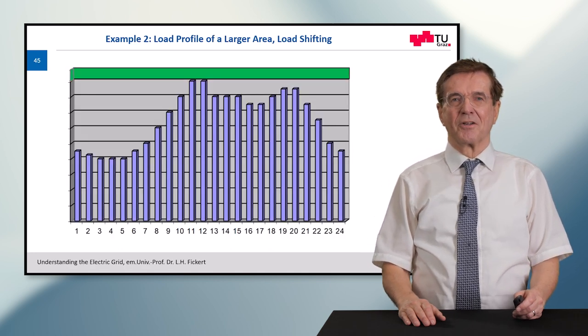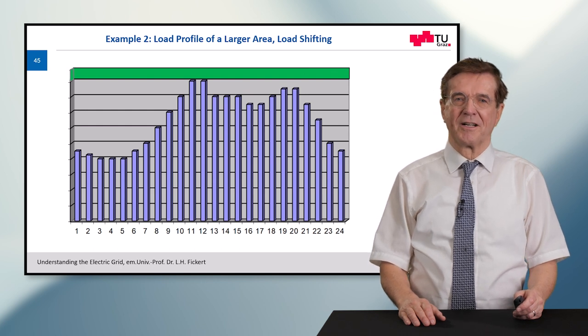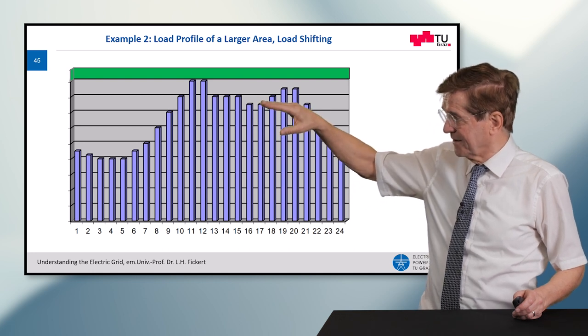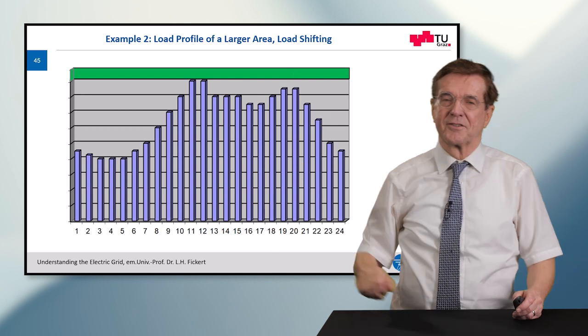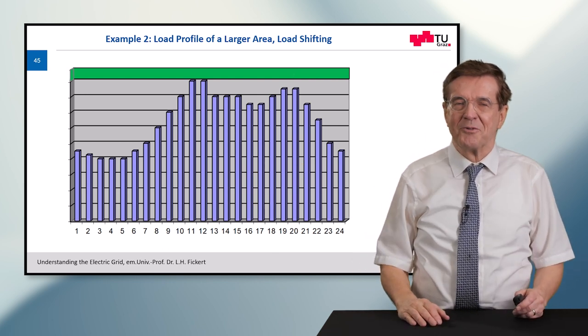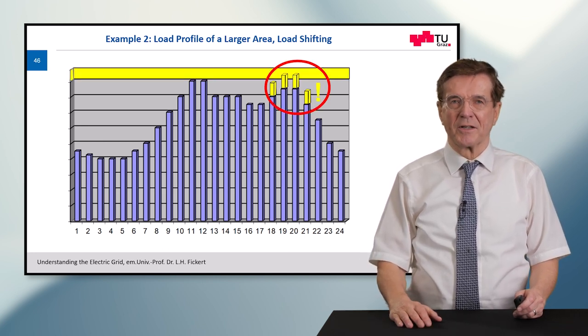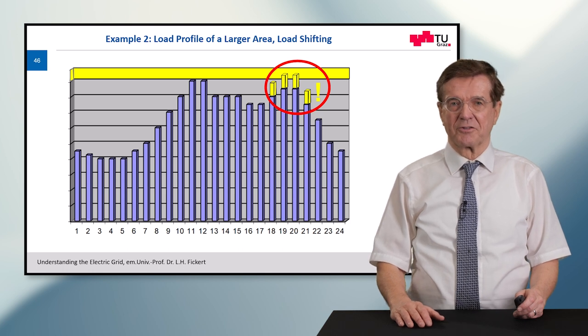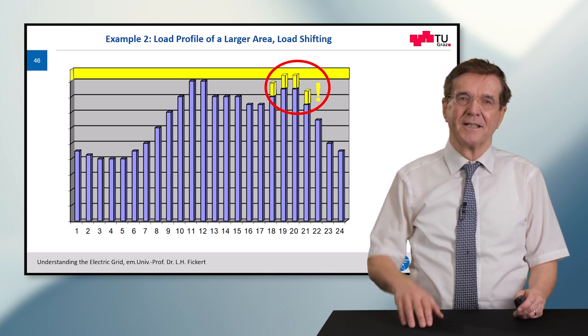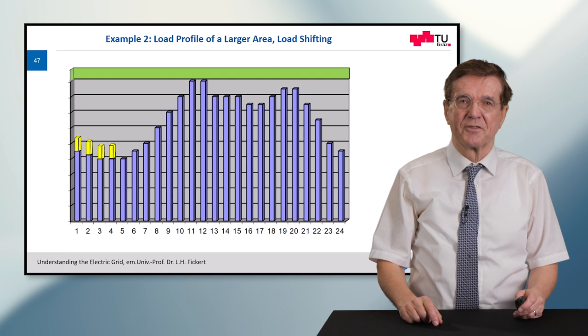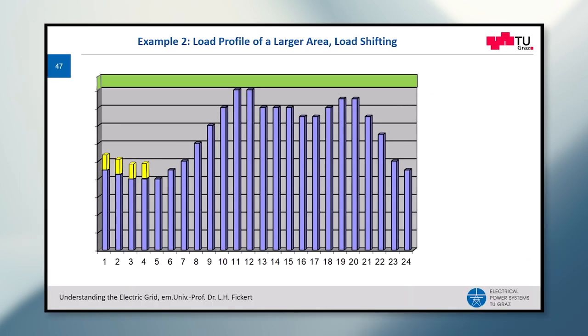Another example about load shifting. We assume a load profile of a larger area. It has a peak at lunchtime and at the evening another evening peak, then consumption goes down as humans go to bed. Now let's assume we plug in a large amount of electric vehicles in the evening hours. We see immediately this exceeds the maximum line capacity. The solution is moving and shifting this load to the early morning hours, and then the situation is relieved. This could be done through smart grid technology.